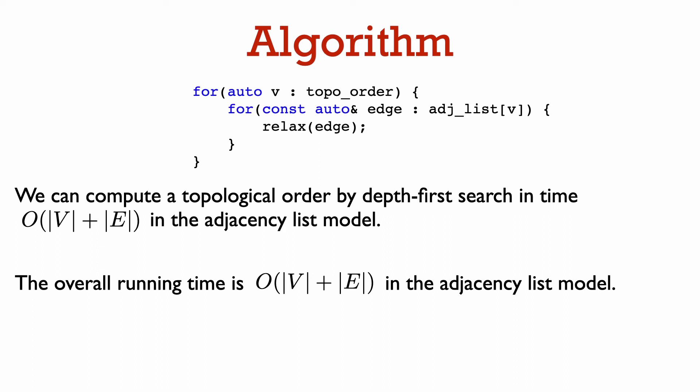Relaxing an edge takes constant time, and in these two for loops here, we relax each edge exactly once. So the running time of the for loops is order the number of edges.